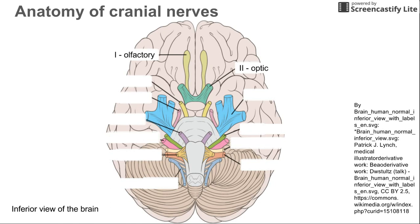Next is the optic nerve. The optic nerves cross at what is called the optic chiasm — one optic nerve goes to each eye, and they cross and go to different sides of the brain after that cross. Number two is the optic nerve, shown in green.